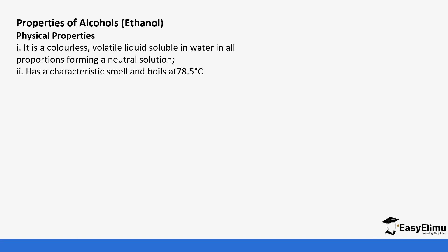Looking at the properties of alcohols: ethanol is a colourless and volatile liquid which is soluble in water in all proportions, forming a neutral solution. It has a characteristic smell and boils at 78.5 degrees Celsius. When ethanol is dissolved in water it dissociates slightly — hydrogen ions are separated from the structure — so the pH will be slightly below neutral, which is why alcohols react with some metals.